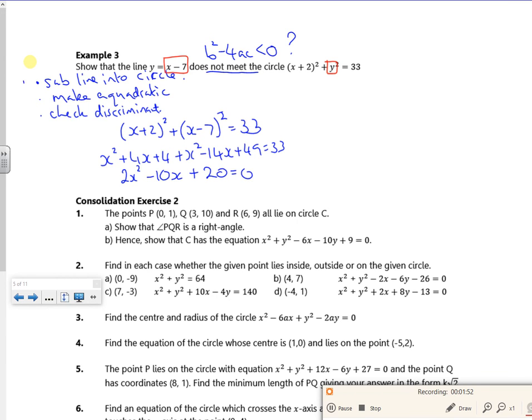So that's subbing it in and making a quadratic equation. So the next bit is to check the discriminant. So b² - 4ac. So (-10)² - 4 times 2 times 20. So b² - 4ac is going to be, well, what have we got? So it's 100 - 160, isn't it? So it's -60. So b² - 4ac is less than 0. Therefore, they don't intersect.